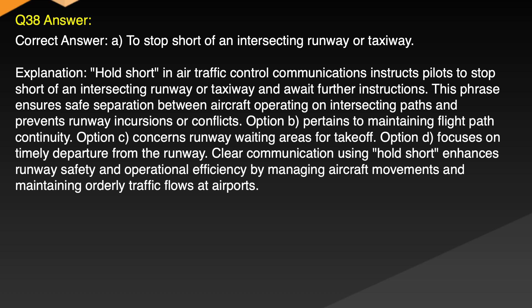Explanation: 'Hold short' in air traffic control communications instructs pilots to stop short of an intersecting runway or taxiway and await further instructions. This phrase ensures safe separation between aircraft operating on intersecting paths and prevents runway incursions or conflicts. Option B pertains to maintaining flight path continuity. Option C concerns runway waiting areas for takeoff. Option D focuses on timely departure from the runway. Clear communication using 'hold short' enhances runway safety and operational efficiency by managing aircraft movements and maintaining orderly traffic flows at airports.